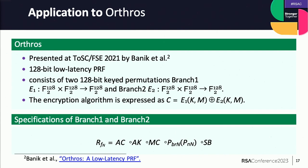We will now explain the results of applying the method to Ultros. Ultros was proposed at TOSC-FSE 2021 by Banik et al. as a 128-bit low-latency PRF. Ultros consists of two 128-bit keyed permutations, branch one and branch two. The encryption algorithm of Ultros is expressed as C = E1(K, M) XOR E2(K, M); that is, the ciphertext is the XOR of the outputs of branch one and branch two.